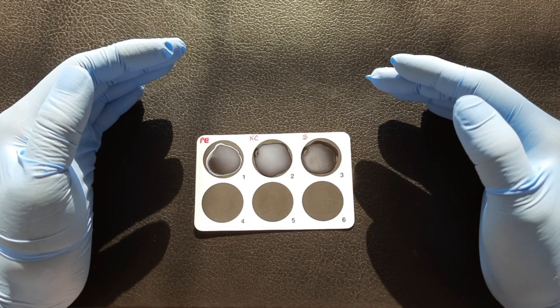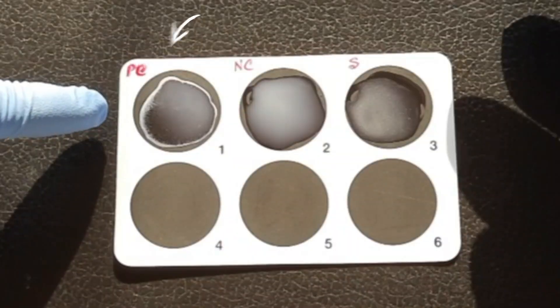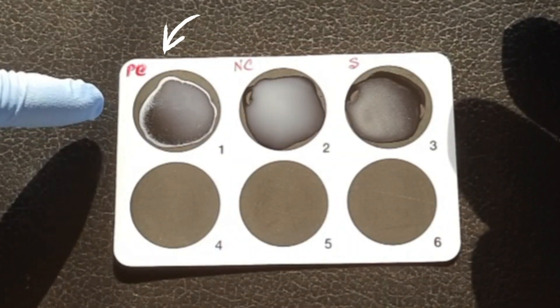You are seeing here the positive control circle shows agglutination. That proves the validity of the test reagent.